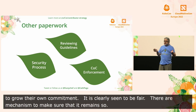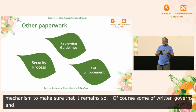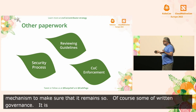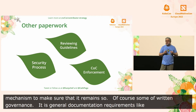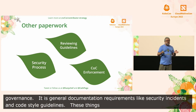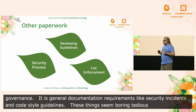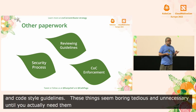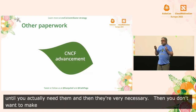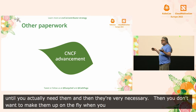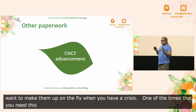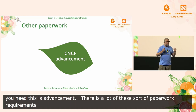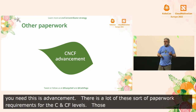Documented governance provides a safe space for your community to grow their commitment to the project. They know they can trust the project because it's clearly seen to be fair, and there are mechanisms to make sure it remains so. Some projects need a lot of other internal documentation too — things like security incident procedures, code of conduct reporting instructions, and code style guidelines. These things seem boring and tedious, maybe unnecessary, until you actually need them, and then they're very necessary. You don't want to be making them up on the fly when you already have a crisis. These are also required for advancement within the CNCF to incubating and graduated status, and those requirements are based on our collective experience running open source projects.